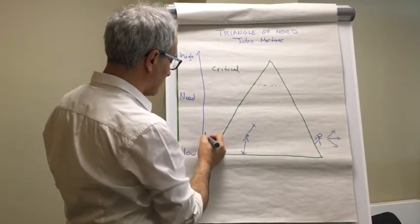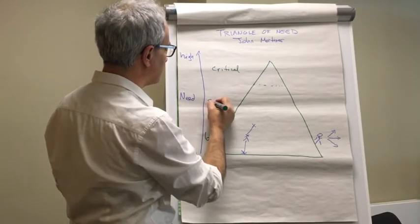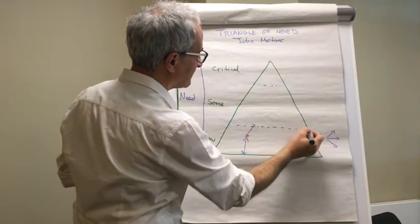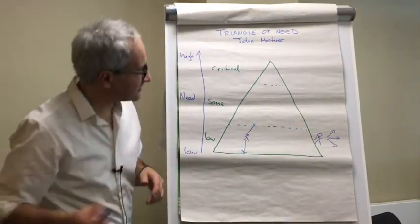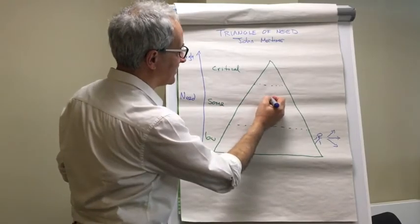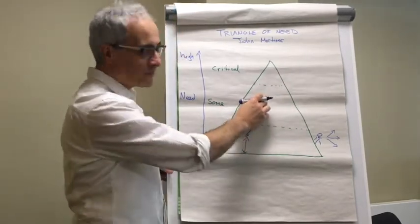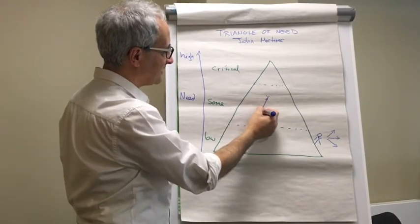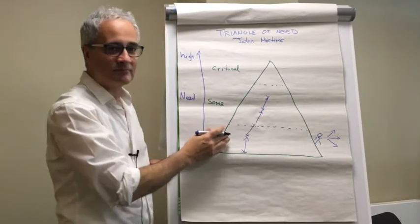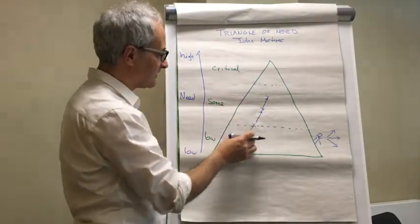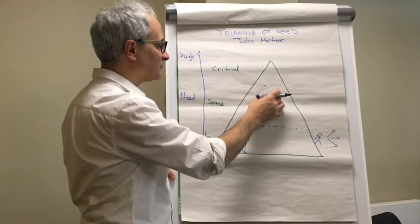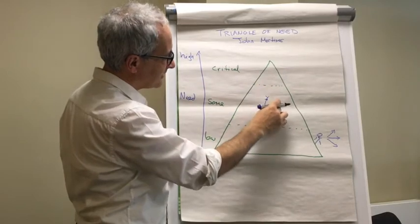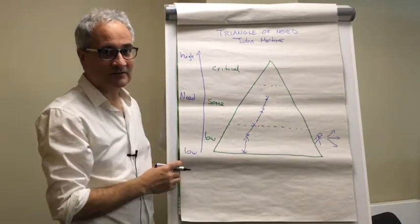So this is low level of need and this is some need. And what we tend to find is that if you look at someone who's here, they haven't always been there. They actually have been on a journey that over time has taken them to that point. They originally were here. And the amount of resources and effort that's required at this point to help them get further down the triangle is quite significant.